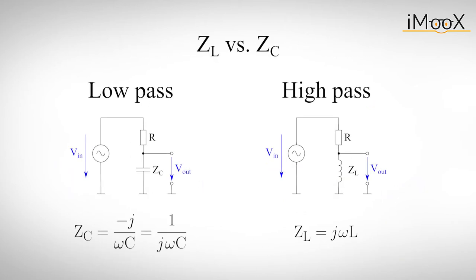As opposed to the impedance of a capacitor, which decreases for high frequency signals, the inductor's impedance will rise linearly with higher frequencies. Its impedance, ZL, is equal to j omega L, where, similar to the capacitor, the j stands for the imaginary unit, omega for the angular frequency and L for the inductance.